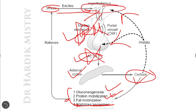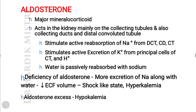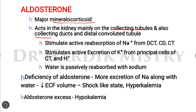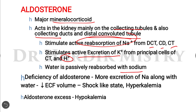Aldosterone is the major mineralocorticoid hormone. It acts in the kidney mainly on the collecting tubules, collecting ducts, and distal convoluted tubules (DCT). It stimulates active reabsorption of sodium ions from these segments, stimulates active excretion of potassium ions from principal cells, and stimulates excretion of hydrogen ions. Water is passively reabsorbed alongside sodium ions.